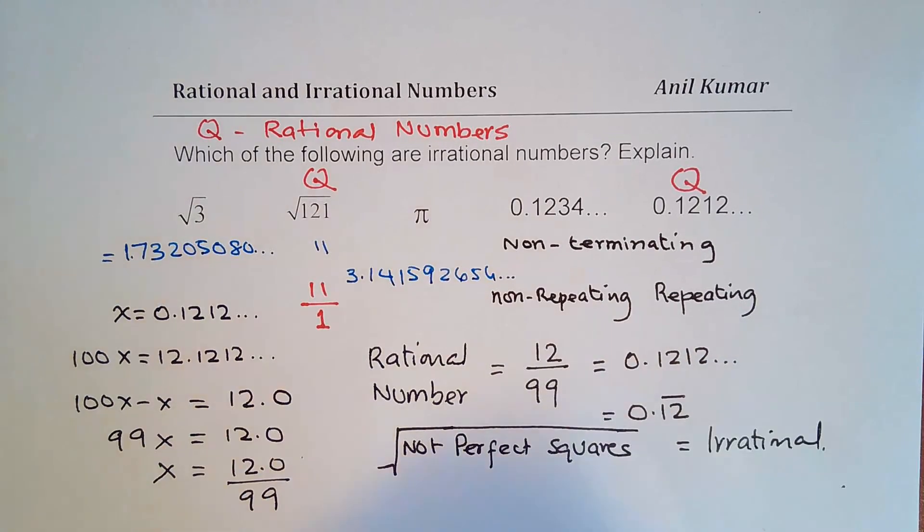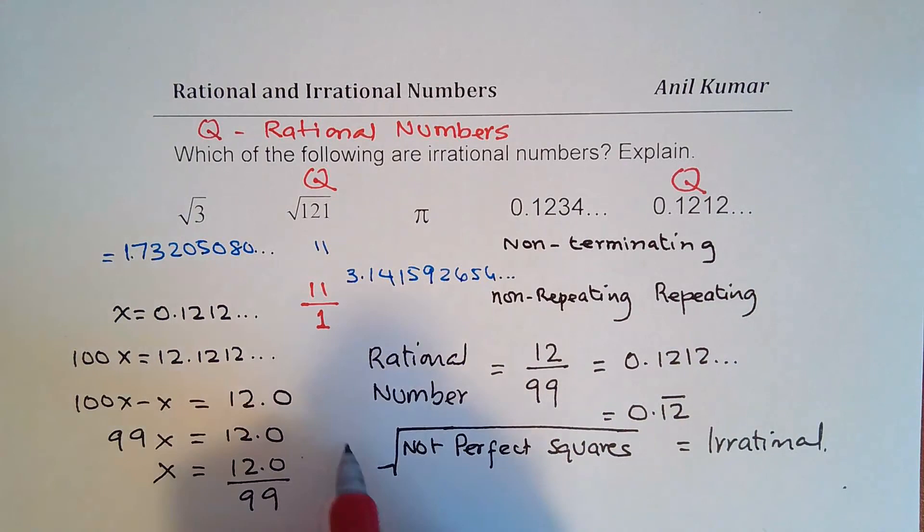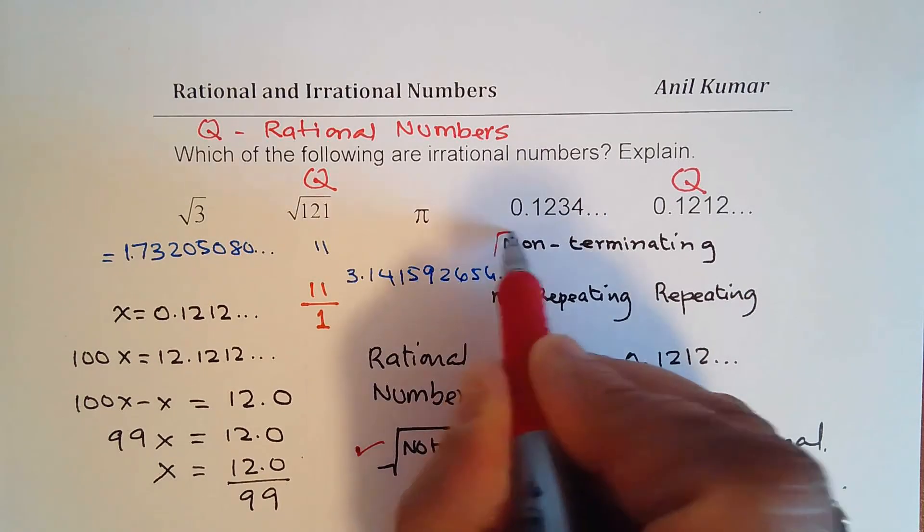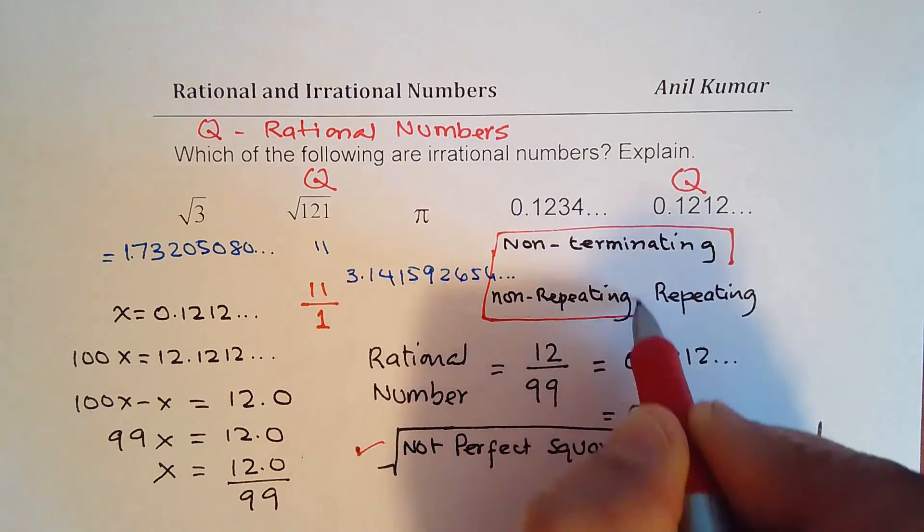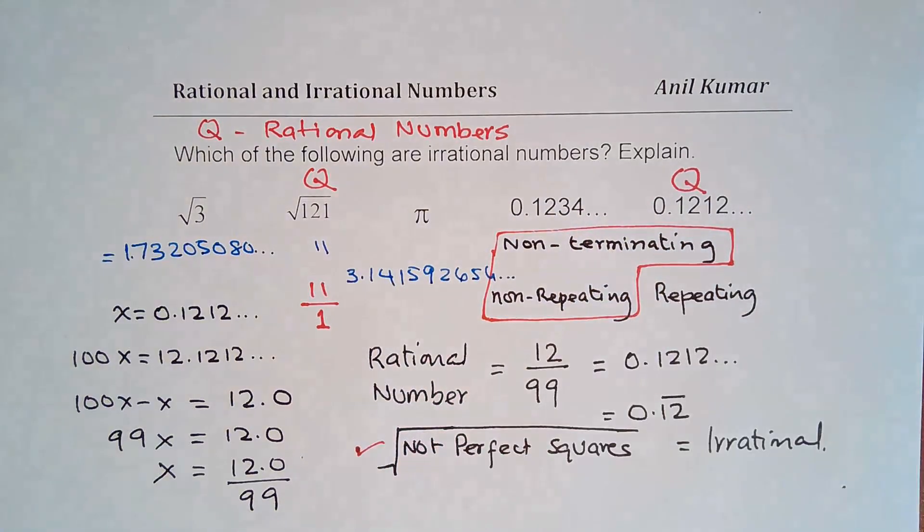So in the category of irrational numbers, you can say we have two major categories. One are these kinds, and the other one are the ones which have non-terminating and non-repeating pattern. So that becomes a group of irrational numbers.